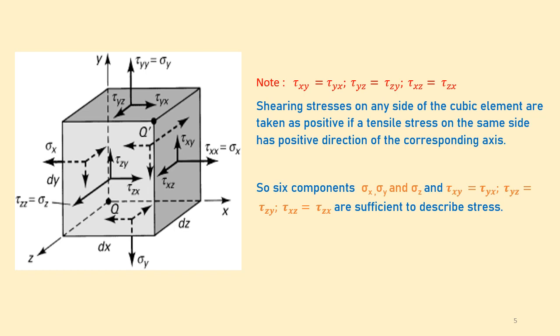In this diagram, all the components of stresses — both normal and shearing — on various faces of the cube are indicated. Note that tau x-y equals tau y-x, tau y-z equals tau z-y, and tau x-z equals tau z-x. So six components — sigma x, sigma y, sigma z (the normal stresses), and tau x-y, tau y-z, and tau x-z (the shearing stresses) — are sufficient to describe stress at a point.